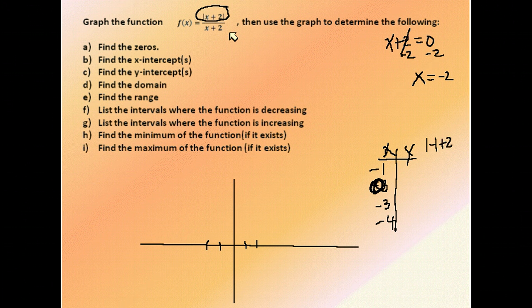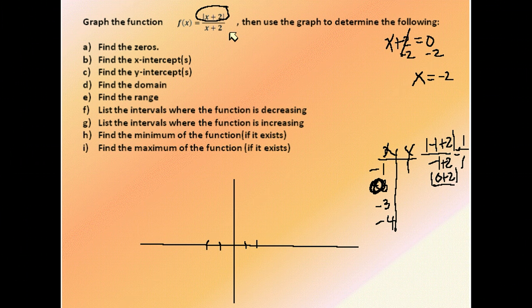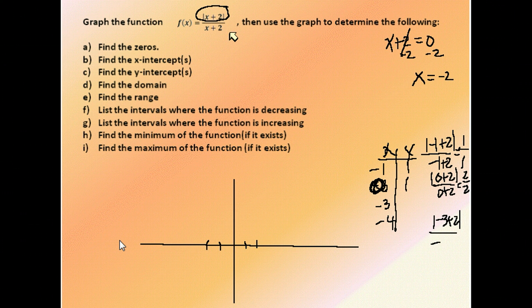I'd have the absolute value of negative 1 plus 2 over negative 1 plus 2. Negative 1 plus 2 is 1. I get 1 over 1 or 1. If I put 0 in there, I get the absolute value of 0 plus 2 over 0 plus 2, which again gives me 2 over 2 or 1. If I put negative 3 into that, I get negative 3 plus 2 absolute value over negative 3 plus 2.